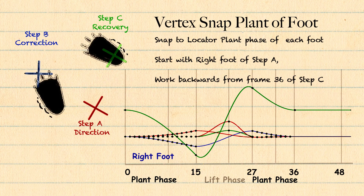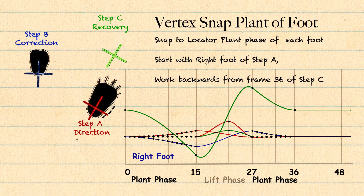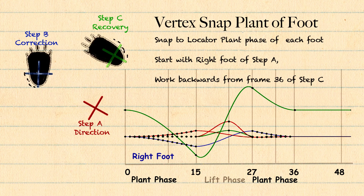I've got a red one, a green one, and a blue one — the red and the green are the most important ones. We start with the red locator and vertex snap the plant phase of the right foot all the way up to frame 15. We'll then go to frame 36 and work backwards with the green locator. With Step A and Step C firmly in place, we can now work out the best position for Step B — the correction phase — placing it so it naturally sits under the weight of the character during the turn.